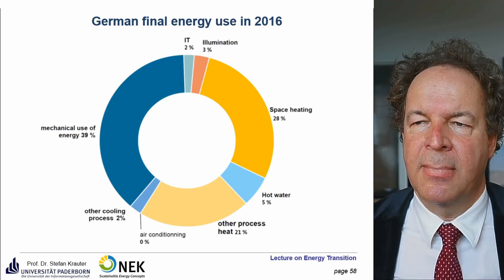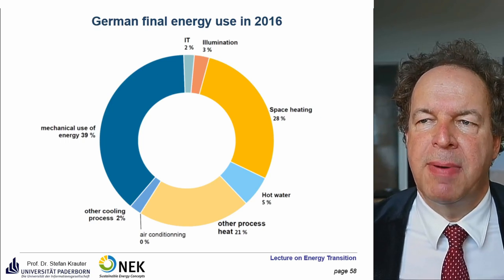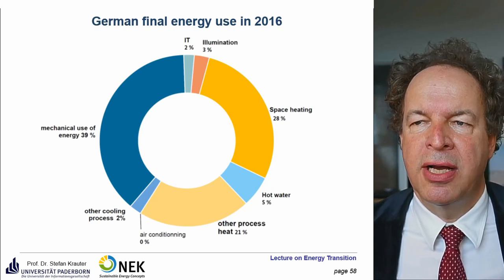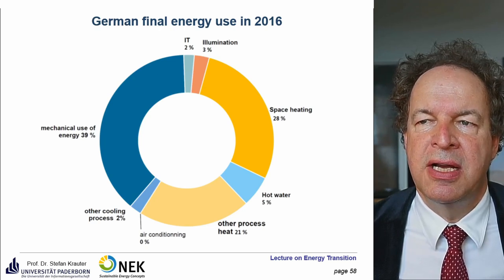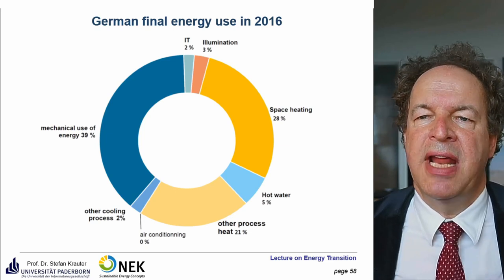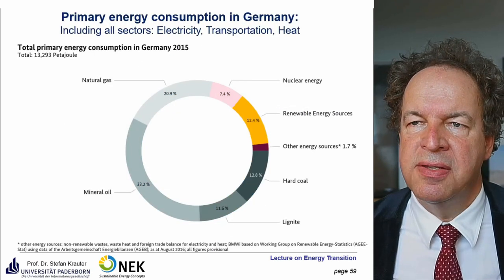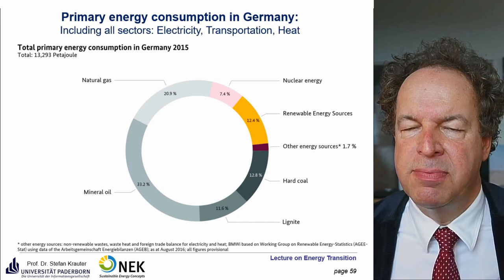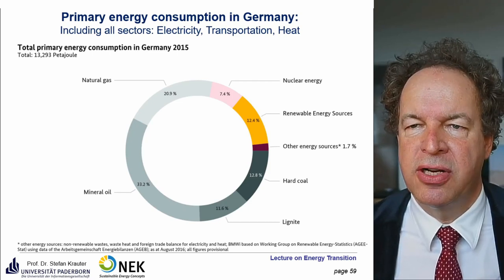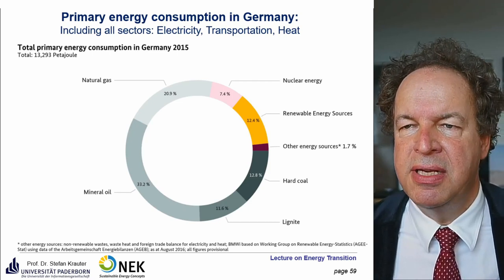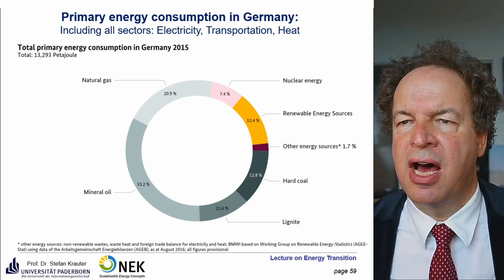Here are some examples of final energy use in Germany. Most is needed for mechanical use — basically traffic, cars, and so on — running on mineral oil, with combustion engine efficiency of only about 30% so 70% is wasted as heat. The next largest is space heating at almost 28–30%. In primary energy consumption, mineral oil dominates because nearly 99% of cars run on mineral oil, followed by natural gas, hard coal, and lignite. Renewable energy sources are relatively small.